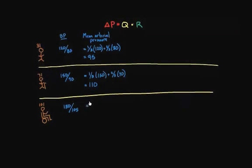And if I wanted to do it at the age of 101, my mean arterial pressure would be one-third times 180 plus two-thirds times 105, and that works out to 100 and, let's see, 60 and 70, 30, 130.